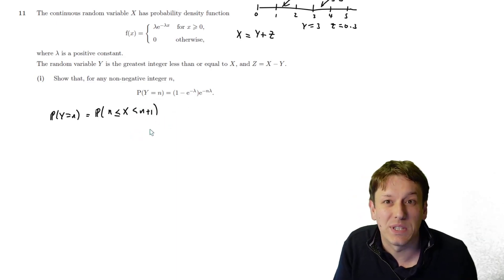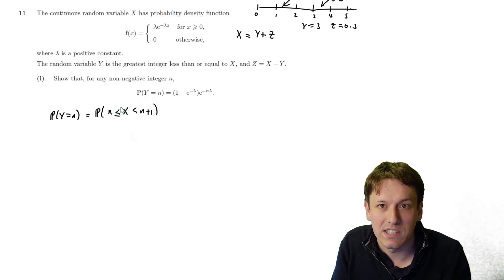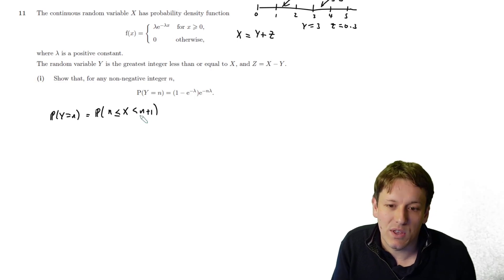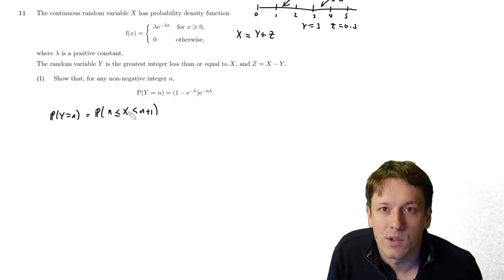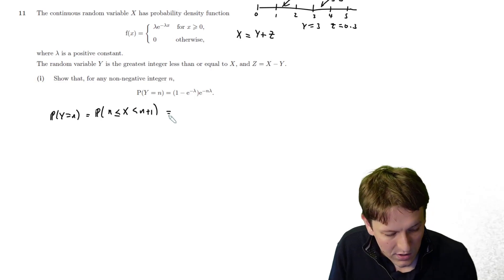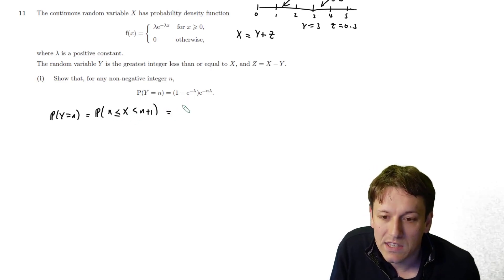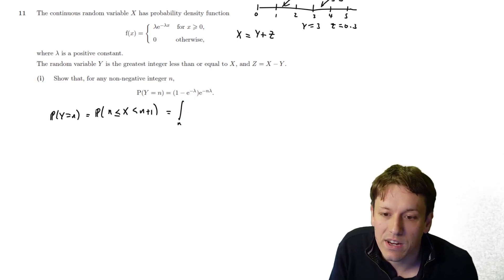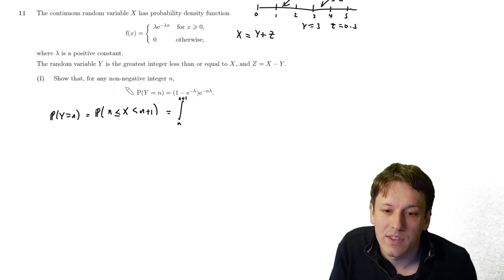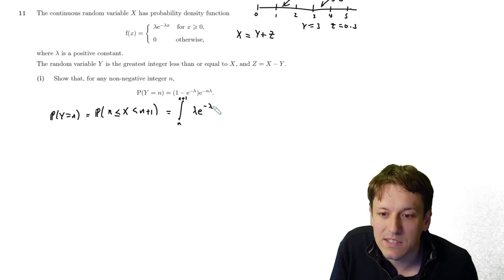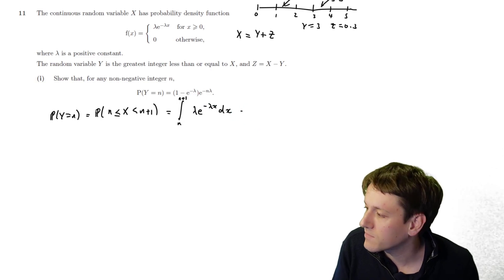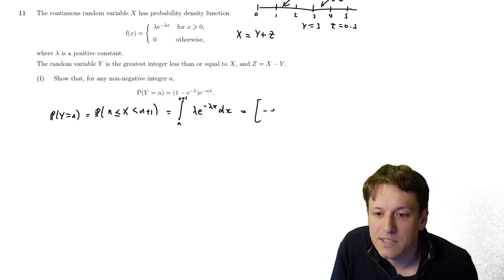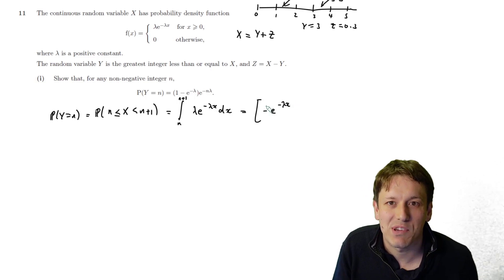Because we're dealing with a continuous random variable, it doesn't matter whether we write strict or non-strict inequalities — the probabilities are unaffected. So P(n ≤ X < n+1) is computed as an integral: we integrate the PDF λe^(−λx) between n and n+1.